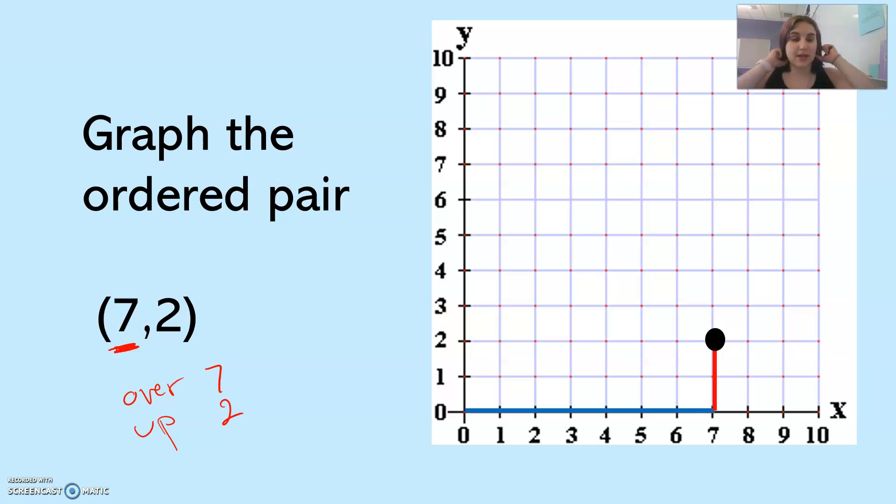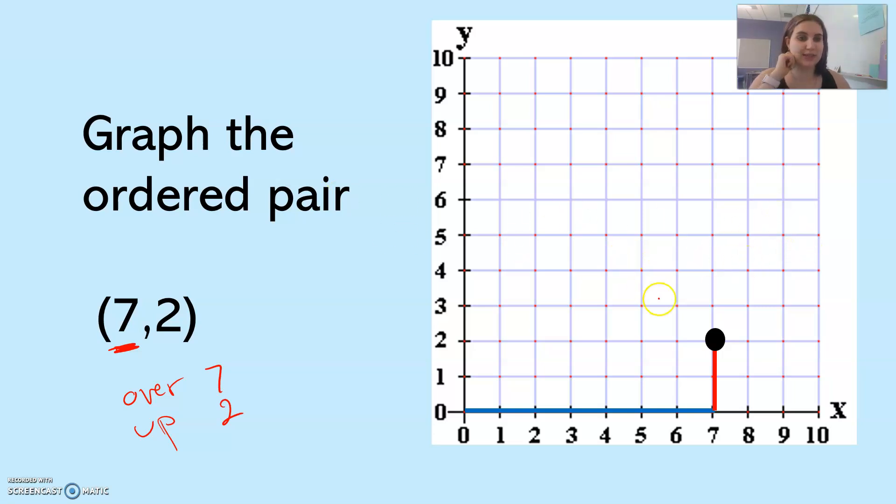You can use a dot. Sometimes it'll be like a symbol. We can also label it seven two, or I can just say that the dot is where seven two is. Hope that helps.